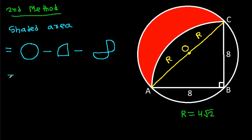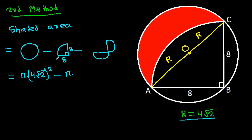Area of circle is pi times radius squared, where radius is 4 root 2. Minus the area of the quarter circle, which is pi times radius 8 squared over 4.